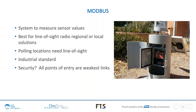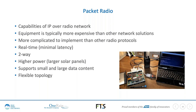Modbus requires line-of-sight radio, typically implemented with a hub-and-spoke architecture where the hub does the polling. The need for line of sight is one of the major issues with a radio-based system like this. From a radio protocol standpoint, Modbus is not very secure — any entry point is a weak link, and in a radio network, every site is essentially an entry point, as is the central polling master.